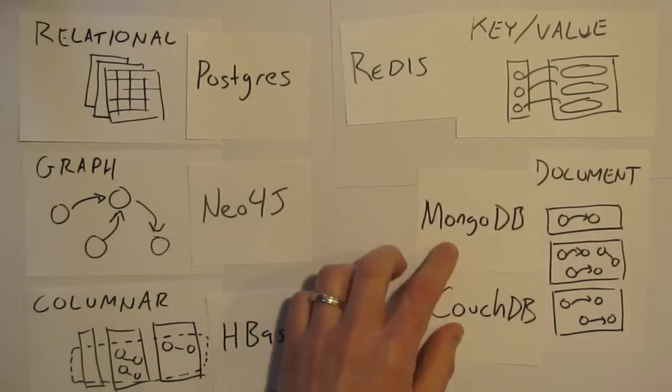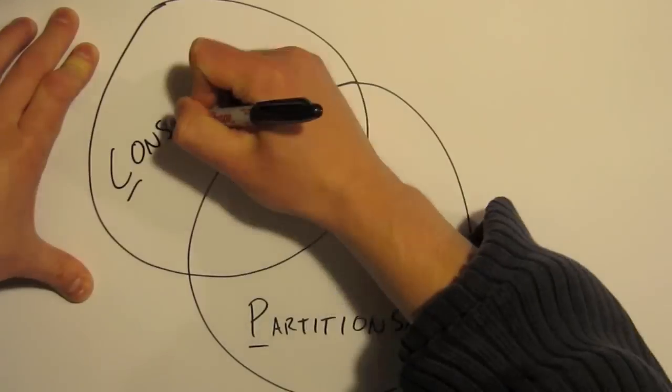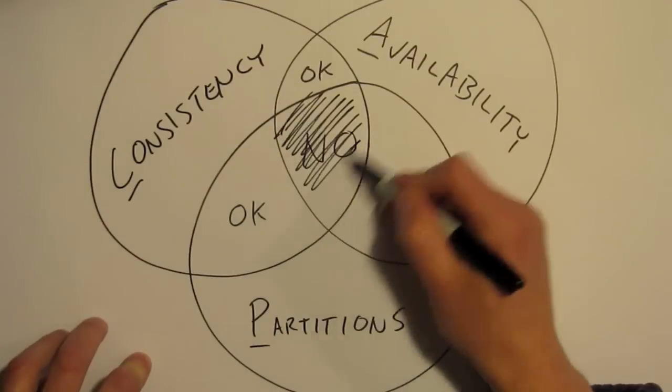Neo4j, Postgres, and HBase, and Redis, and CouchDB, Mongo, and Riak. Partitions, consistency, availability - pick any two, can't have all three!